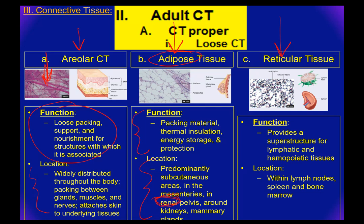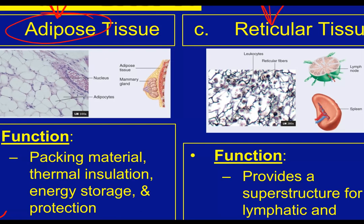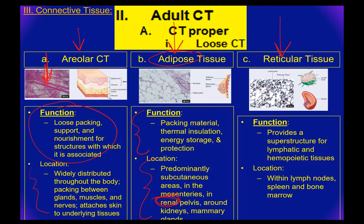Reticular tissue — those black marks that look like somebody took a pen and made squiggles — those are the reticular fibers. They're not particularly strong or thick, but they do fill space. We find them in the lymph node and spleen, where they provide the superstructure for lymphatic and hemopoietic tissue. Think of filling a balloon with packing peanuts instead of air — the balloon takes the shape of what's inside. That's what reticular fibers do: they provide the structure for these organs.